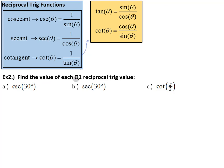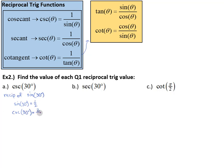Find the value of each quadrant-1 reciprocal trig value. For cosecant of 30 degrees: cosecant is the reciprocal of sine, so it's the reciprocal of the sine of 30 degrees. Using the left-hand trick, 30 degrees is your ring finger, and sine is on the right — so the sine of 30 degrees is 1/2. But we're not looking for sine of 30 degrees, we're looking for cosecant of 30 degrees, so we take the reciprocal. The cosecant of 30 degrees is 2 over 1, or 2.